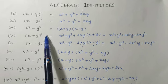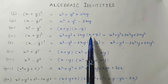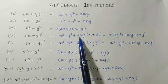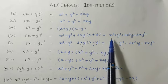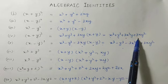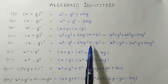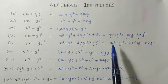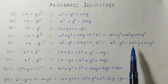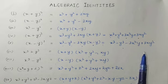The fourth identity: (x + y)³ = x³ + y³ + 3xy(x + y), which expands further to x³ + y³ + 3x²y + 3xy². The fifth: (x - y)³ = x³ - y³ - 3xy(x - y), which expands to x³ - y³ - 3x²y + 3xy².